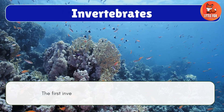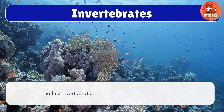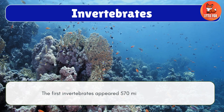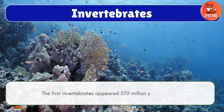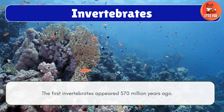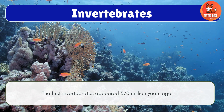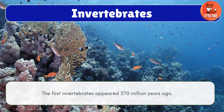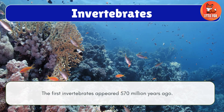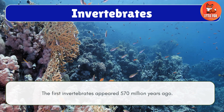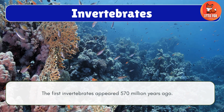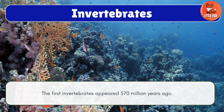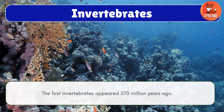Invertebrates first evolved and appeared about 570 million years ago. Invertebrate animals do not have a backbone. They are more numerous than vertebrates and are found everywhere.